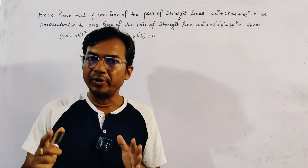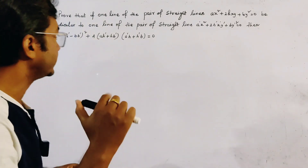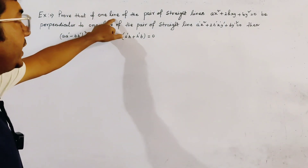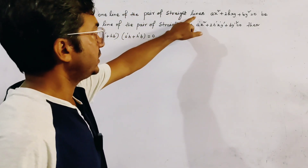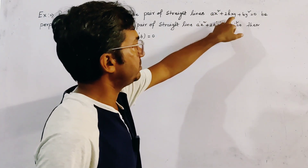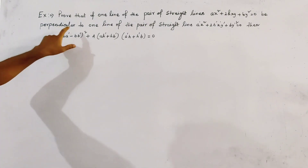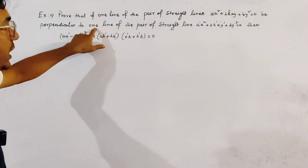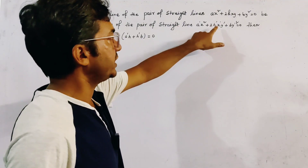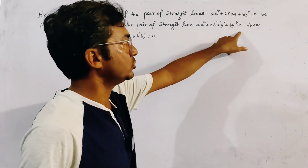Today's problem is from pair of straight lines. We have to prove that if one line of the pair of straight lines given by x² + 2hxy + by² = 0 is perpendicular to one line of the pair a'x² + 2h'xy + b'y² = 0, then we have to prove a certain relation.